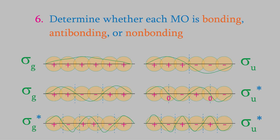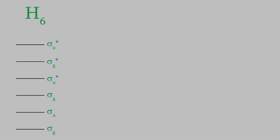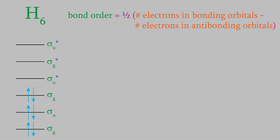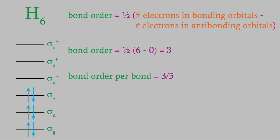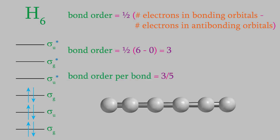Finally, we can draw an energy level diagram for the molecule. The molecular orbitals have these relative energies. The bonding MOs have the lowest energy and the antibonding ones have the highest. The molecule has six electrons, so we put six arrows in the orbitals — a pair in each of the bonding orbitals. To find the bond order, we use this equation. There are six electrons in bonding orbitals and none in antibonding ones, so that gives us a bond order of three. To get the bond order per bond, we divide this by five, because there are five bonds. That gives us a result of three-fifths. That makes this a bit more stable than the H3 molecule, which had a bond order per bond of one-half, but it's still less than one, so this is another unstable molecule.